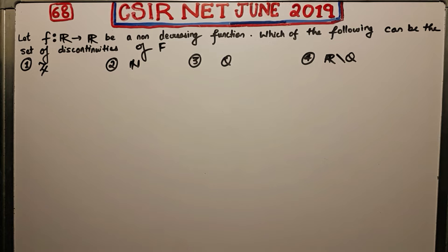This is actually a question from the topic of analysis. So let us firstly read this question. It says let f such that R to R be a non-decreasing function. Which of the following can be the set of discontinuities of f?